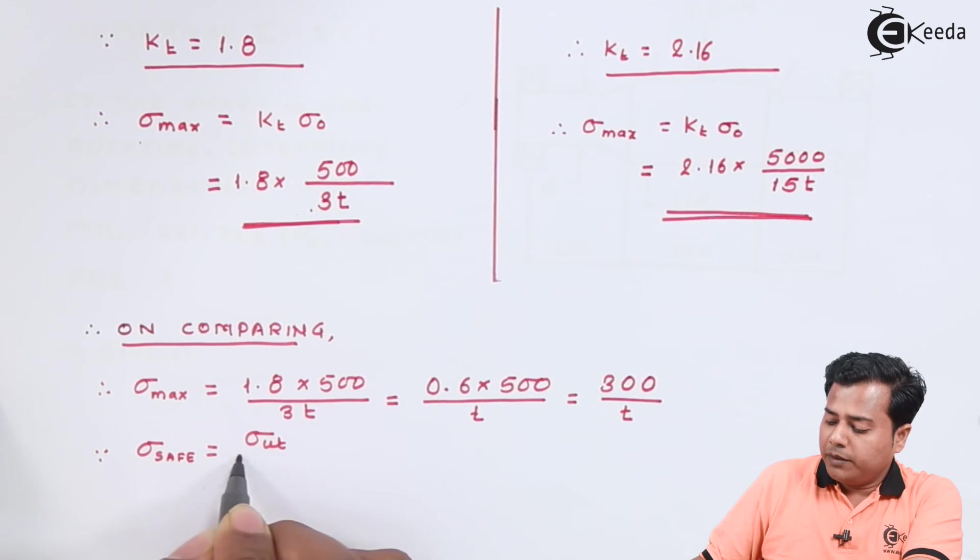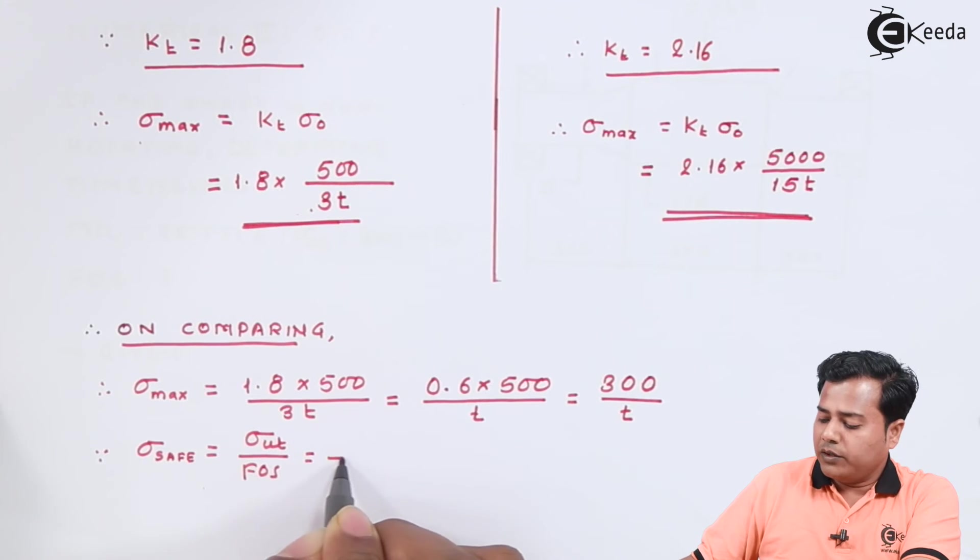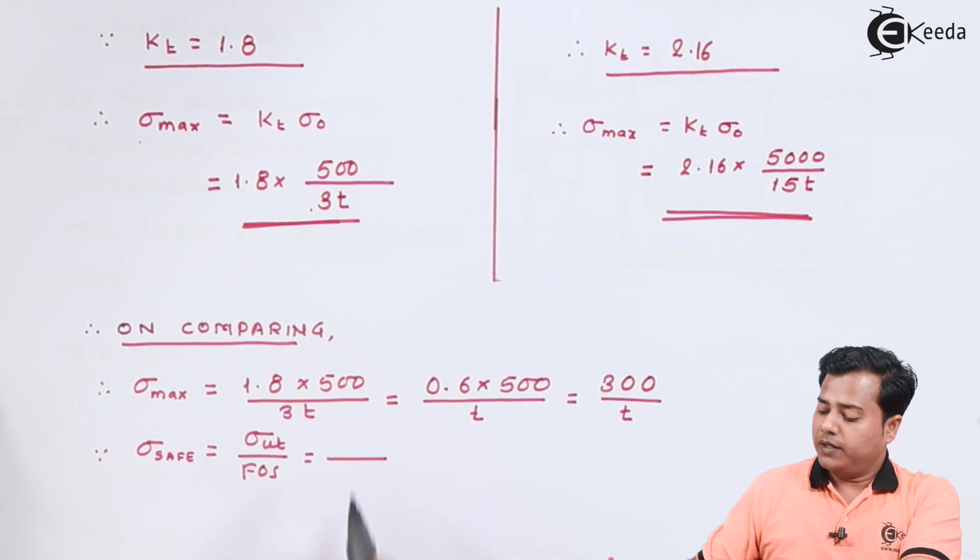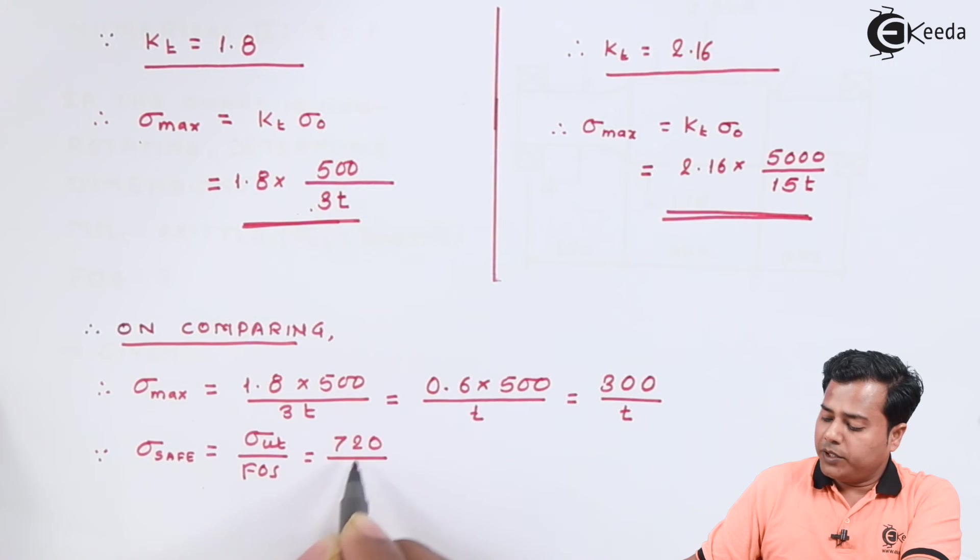If we substitute the values of sigma ut which is 720 divided by 2.5, so whatever the value comes out I can definitely apply that value here.